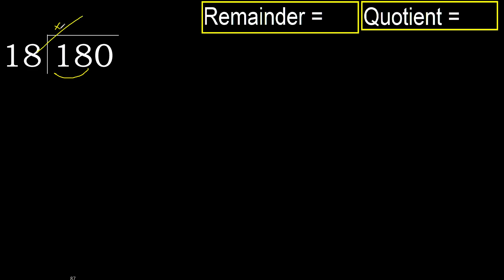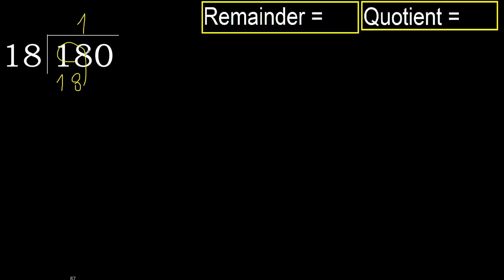18 multiplied by which number is nearest to 18 but not greater? 18 multiplied by 2: 36 is greater. Multiply by 1: 18 is not greater. Subtract: 18 minus 18 equals 0.